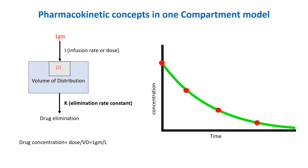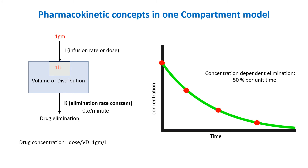The elimination rate constant K quantifies the proportion of the drug eliminated per unit time. Suppose K is 0.5 per minute, meaning 50% of the drug is removed every minute.